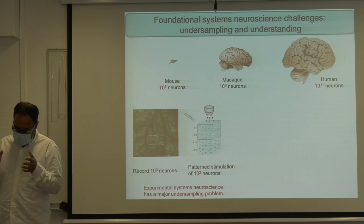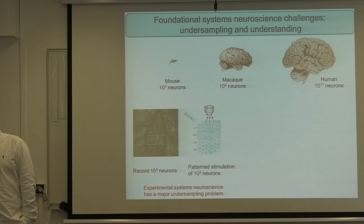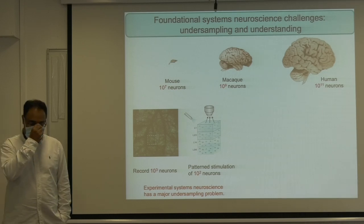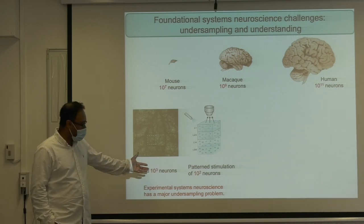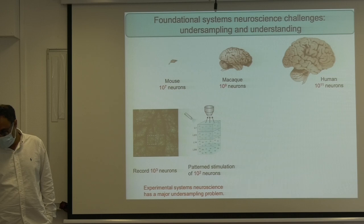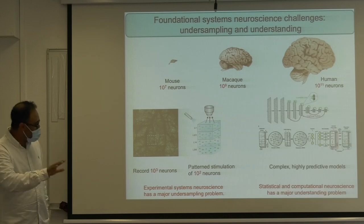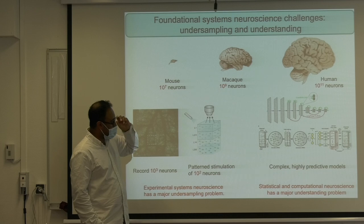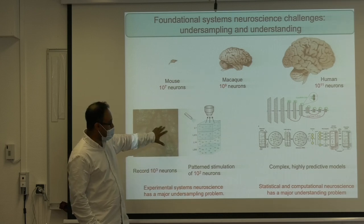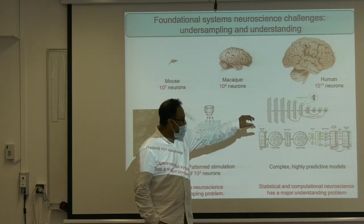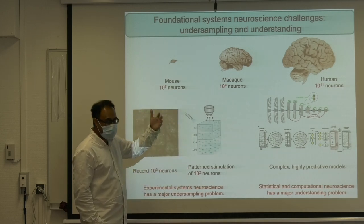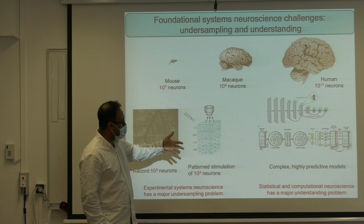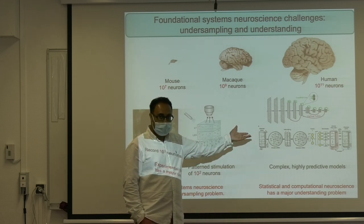This raises profound theoretical questions about what we can possibly say about the collective dynamics of the much larger unobserved circuit from recordings of a very small set of neurons. But undeterred, without an answer to that question, these are still pretty large datasets, so people are diving in and using machine learning methods to model these datasets — the relations between inputs and outputs, the dynamics of neurons — using pretty complicated models.